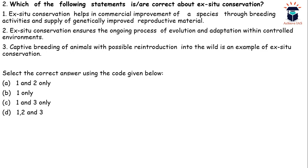The second question is about ex-situ conservation. We have to consider which of the following statements are correct. First, ex-situ conservation helps in commercial improvement of a species through breeding activities and supply of genetically improved reproductive material. Second, ex-situ conservation ensures the ongoing process of evolution and adaptation within controlled environments. Third, captive breeding of animals with possible reintroduction into the wild is an example of ex-situ conservation. All of these statements are correct.